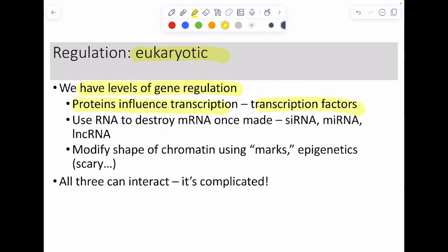We could use RNA to destroy mRNA. There are different versions of that. We could also change the shape of chromatin. This is a phenomenon called epigenetics. And all three of these things can interact with each other. And the result is it's complicated. Our gene expression is far more complicated than prokaryotic gene expression.